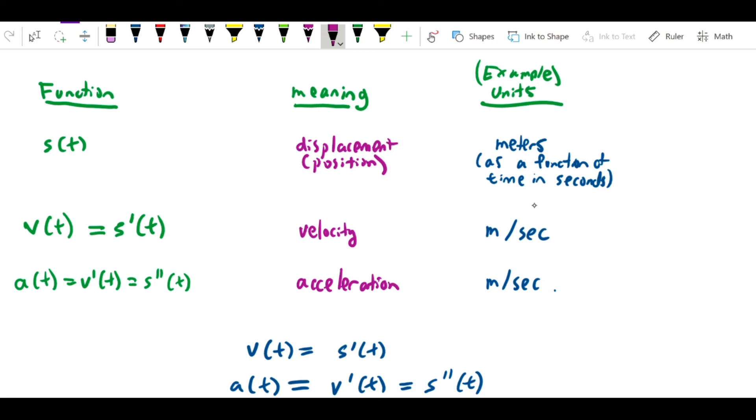You can measure it in anything you want, but if we measure t in seconds and displacement s in meters, then if we take its derivative s'(t), what we get is the velocity measured in meters per second.